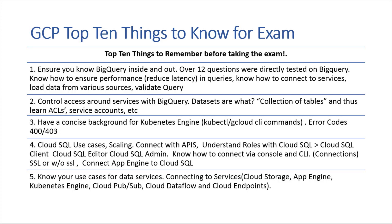Number three: make sure you have a good background in Kubernetes Engine. Know command lines like kubectl and gcloud CLI commands to start and stop clusters, bring up clusters, and add to the cluster. Also know the error codes for Kubernetes, such as 400 and 403. Understand how to deploy Kubernetes in a CI pipeline and the complementary services like container engine or Cloud Build that can work alongside Kubernetes Engine as part of a pipeline.